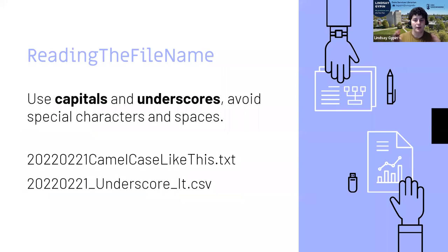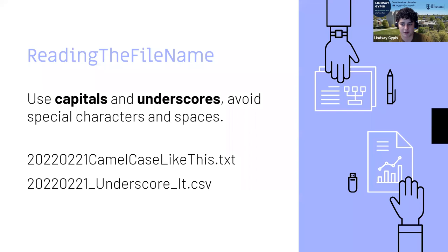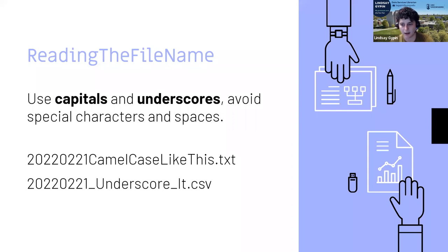To make your file name more readable, use capitals and underscores, but avoid special characters and spaces. A lot of programs aren't going to be able to read every special character, and some programs don't allow spaces, so if you just don't use them you're going to be golden. The date convention goes at the beginning. If you've never heard of it before, it's called camel case - that's when you eliminate the spaces and capitalize the first letter of every word. It's sort of like the humps in a camel's back. If you prefer underscores, keep in mind that adds to your characters and makes it harder to stay under 25.